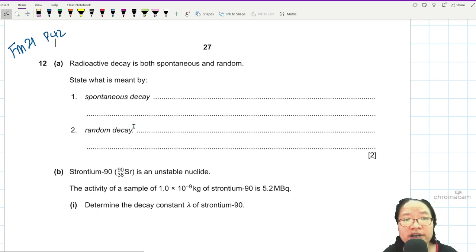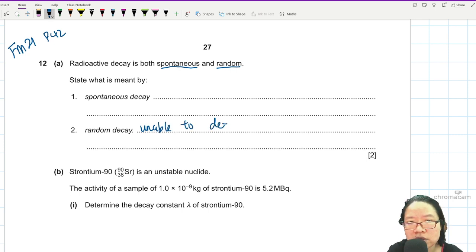Okay, 12A. Radioactive decay is both spontaneous and random. State what is meant by spontaneous and random decay. So sometimes when I think about this, random is something that I learned in probability. When I say that the event is random, means you don't know when it will happen. You cannot tell. So random here is unable to determine which nucleus will decay next.